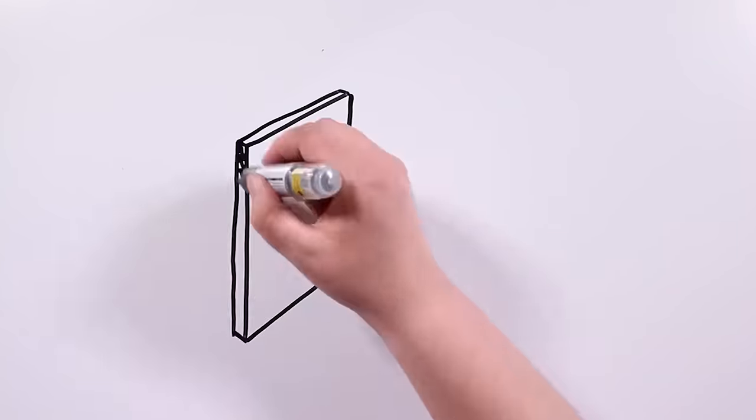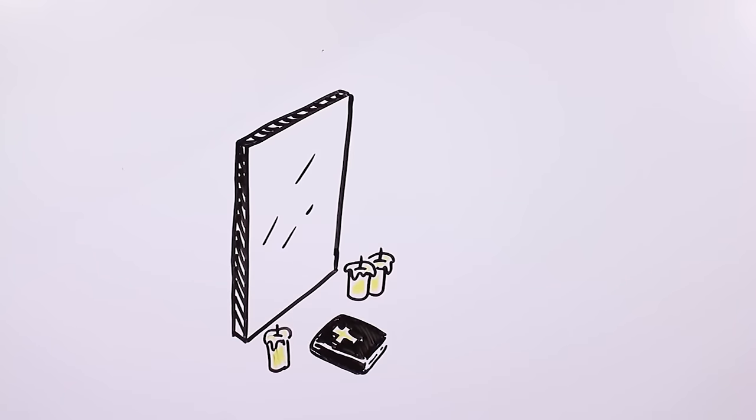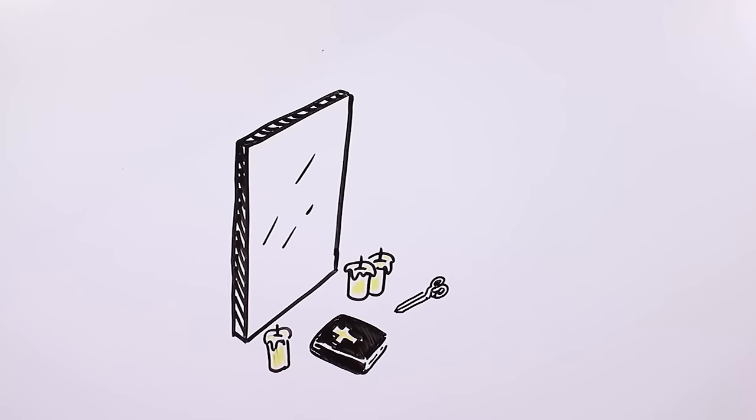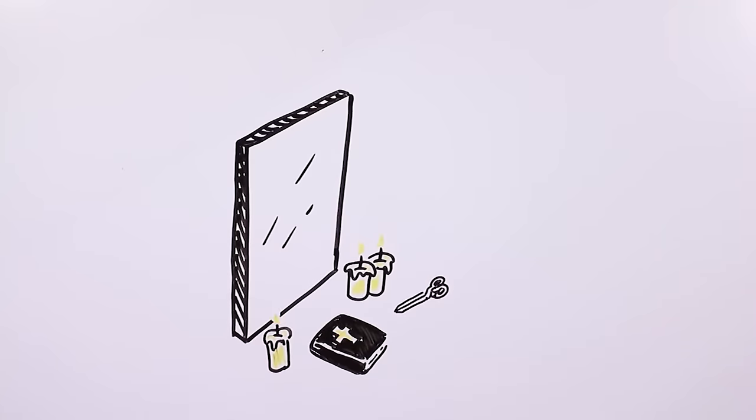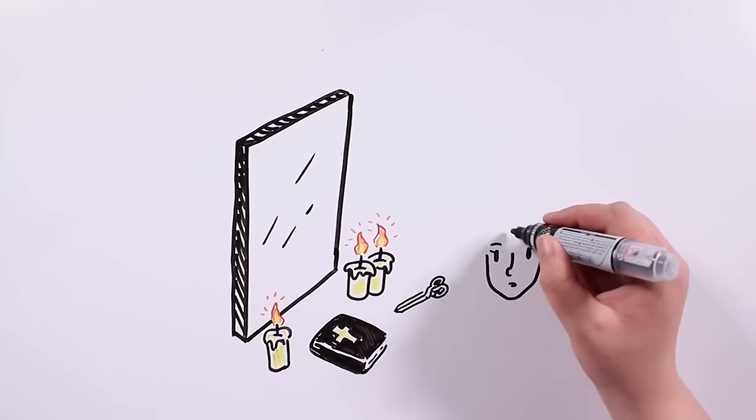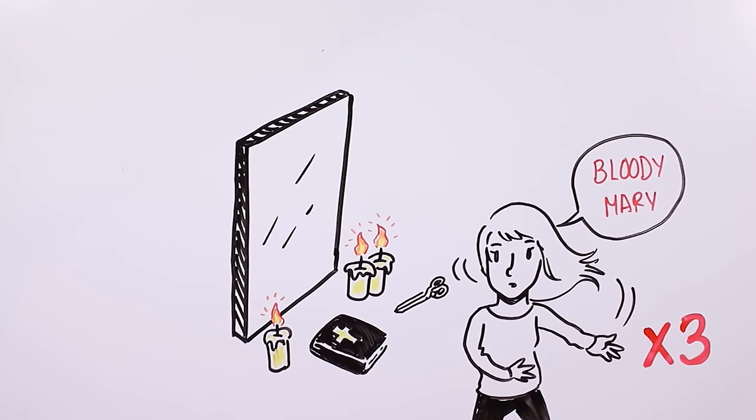In the case of Bloody Mary, a dark room is necessary – three candles, a bible, scissors like the ones that caused her death, and of course, a mirror. Those three candles should be lit in front of it, and turned three times around ourselves, while we repeat her name three more times.